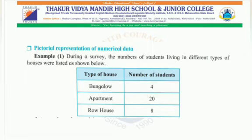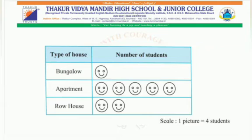That is not necessary. It is easier to use an appropriate scale for the numbers in the data. For example, here all three numbers in the given data are divisible by four. So, using one picture for four students — the students living in the bungalow will be shown by one picture, those in apartment by five pictures, and those in row houses by two pictures. After drawing, the pictograph will look like this. The aim of the pictograph is to make numerical information easier to understand. Note that all the numbers are also divisible by two, so we could use a scale of two students per picture, but in that case the number of pictures will increase and it will not be as easy to understand the numerical information.